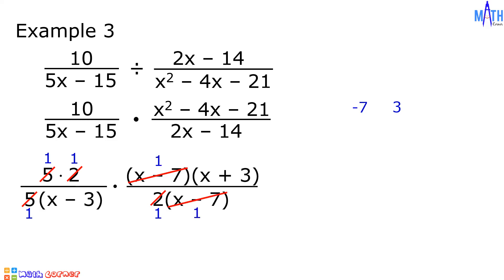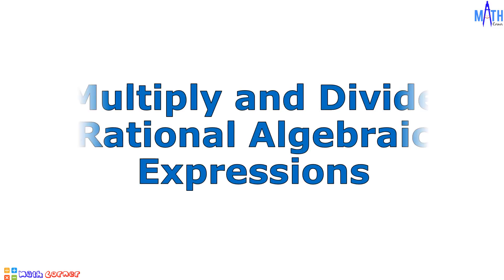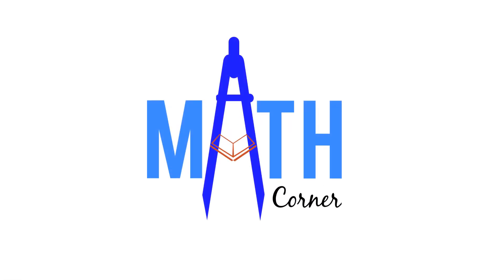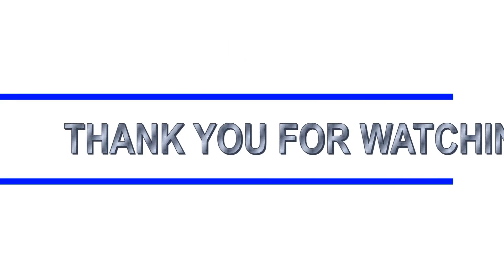Let us multiply the remaining factors. In the numerator, we have x plus 3. In the denominator, we have x minus 3. And this is the answer. That is how to multiply and divide rational algebraic expressions. That's all for this video. Thank you for watching.